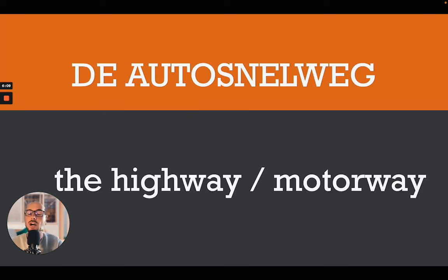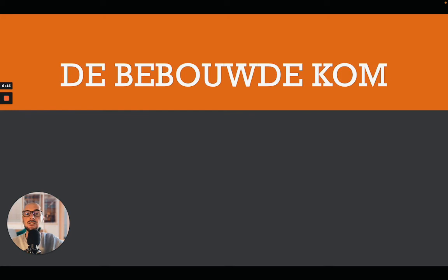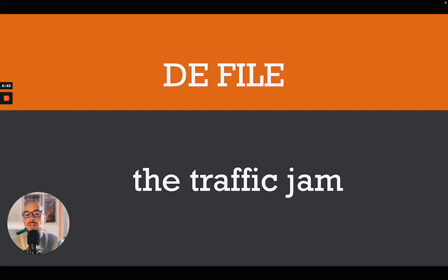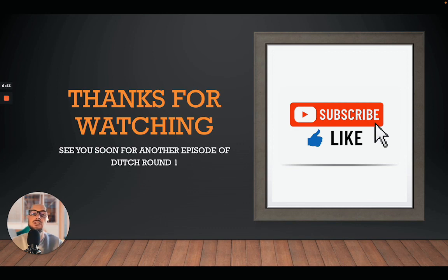The highway or motorway would be 'de autosnelweg.' Then there's 'de bebouwde kom,' which is a little difficult to translate literally. It's a word you'll see a lot when studying for your driver's license — it refers to an urban area. Inside 'de bebouwde kom' you have to reduce your speed. And of course, not very pleasant but sometimes you're in a traffic jam — we call that 'de file.' So those were the 25 words for today.